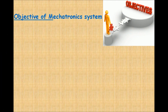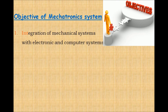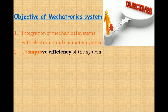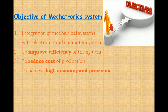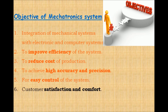The objectives of a mechatronics system are: first, integration of mechanical systems with electronic and computer systems; second, to improve efficiency of the system; third, to reduce cost of production; fourth, to achieve high accuracy and precision; fifth, ease of control of the system; and sixth, customer satisfaction and comfort.